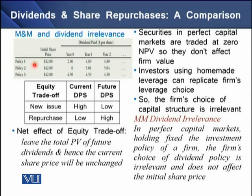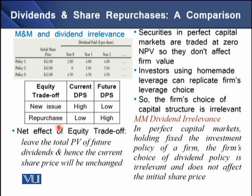A summary table shows the effect of all three policies on dividends per share now and in the future. For policies 1 and 2, future dividends increase; for policy 3, future dividends decline. There is a trade-off: with new equity issuance, current dividend per share is high but future dividend per share is low due to more outstanding shares. With share repurchase, current dividend is low but future dividend per share is high since outstanding shares are fewer. The total present value of future dividends is unchanged, so the current share price remains the same.